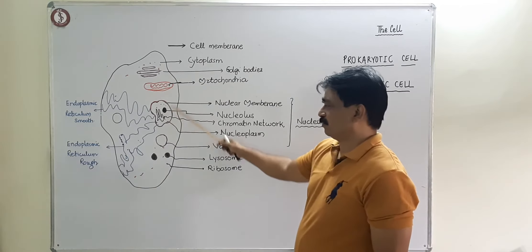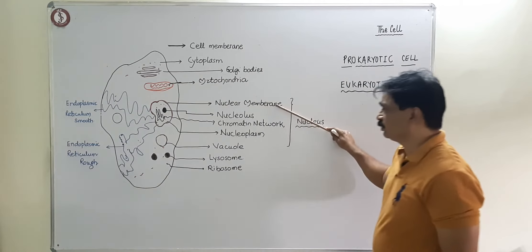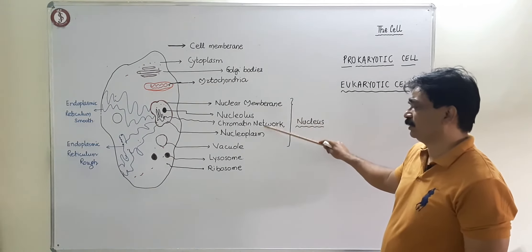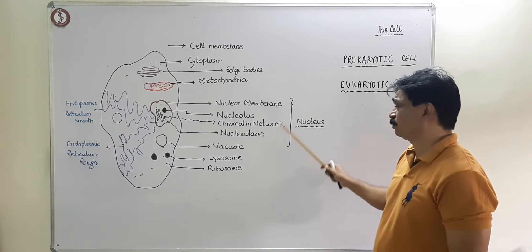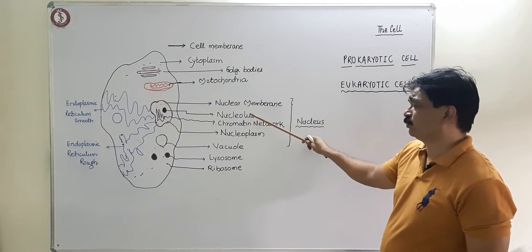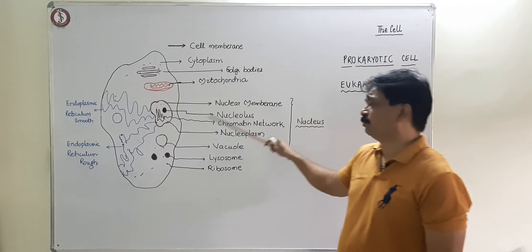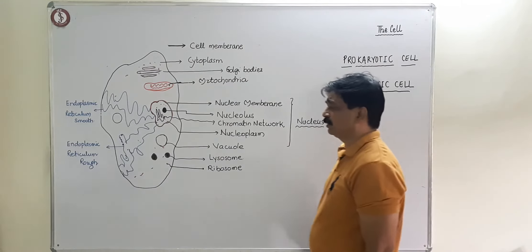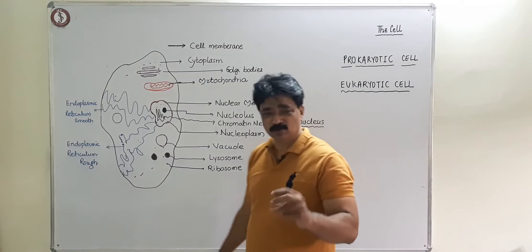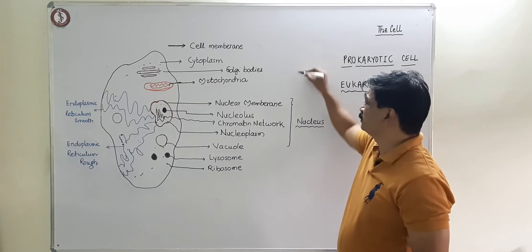The cover of the nucleus is the nuclear membrane. Inside it we have the nucleolus, chromatin network, and nucleoplasm. Just like cytoplasm is the fluid outside, nucleoplasm is the fluid inside the nucleus in which the nucleolus, chromatin network, and nuclear membrane components float.